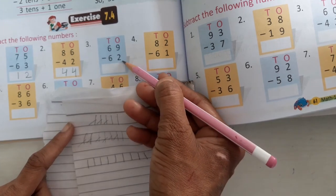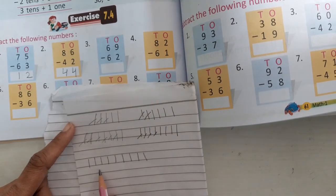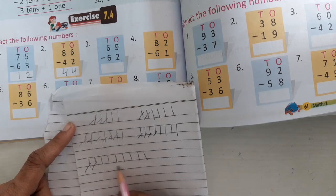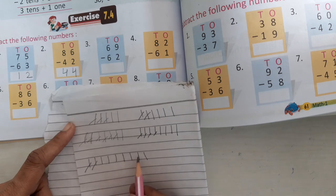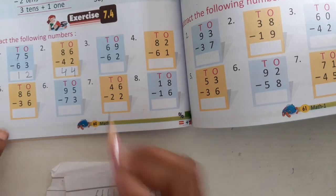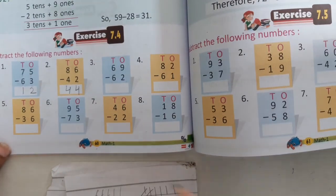And below we have 2, so 2 lines we will cut, 1, 2. How many lines are left? 1, 2, 3, 4, 5, 6, 7. So here we will write 7.